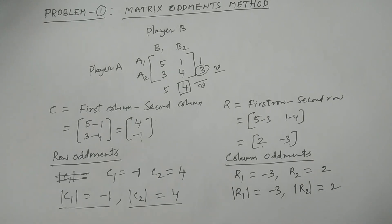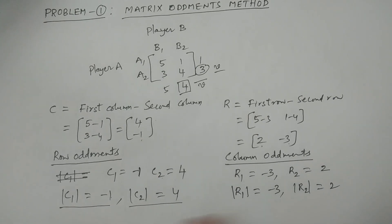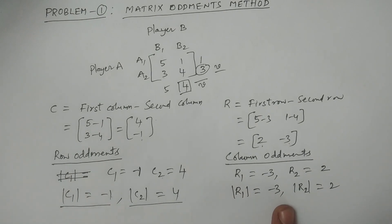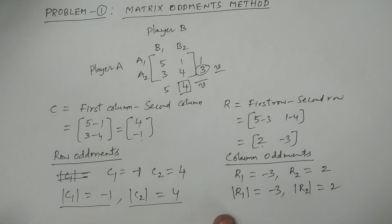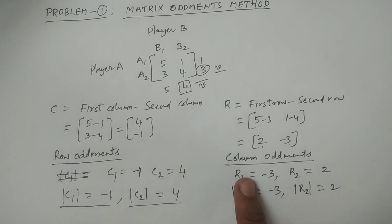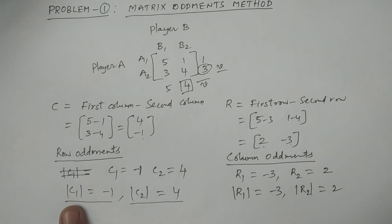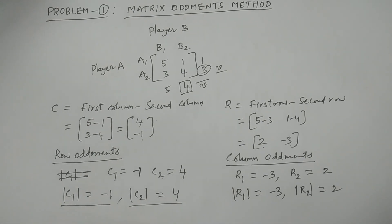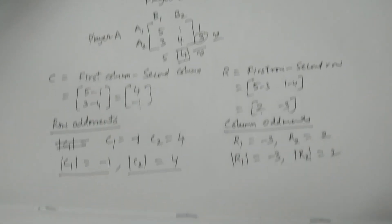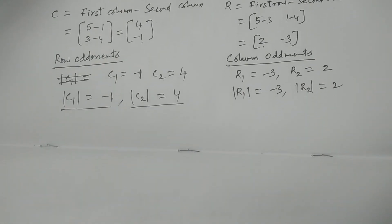Here are the row oddments and column oddments. We calculate the determinants for each. For a 2x2 matrix, each is a single element. C1, C2, R1, R2 are all single elements. So the oddments method formula uses these determinant values we have calculated.